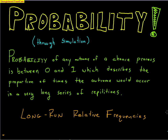Welcome to the wonderful world of probability. This is the first of many videos helping you understand probability. I first want to teach you probability through simulations. The definition of probability is that the probability of any outcome of a chance process is between 0 and 1, which describes the proportion of times the outcome would occur in a very long series of repetitions. So let's break this definition down.